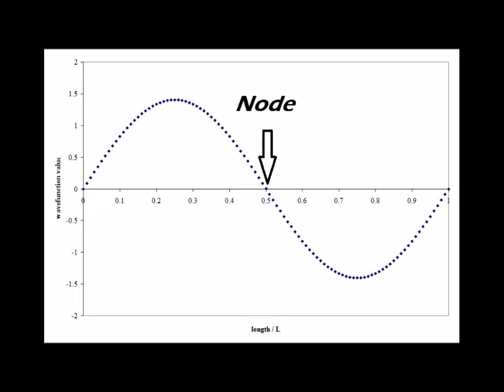Here is the wave function solution for n equals 2. Notice that it has a node where the wave function crosses zero at L over 2.